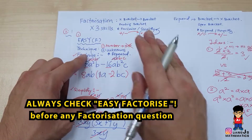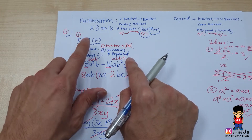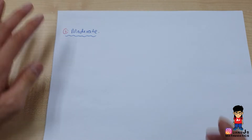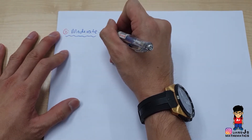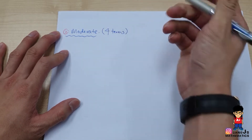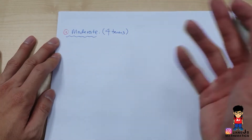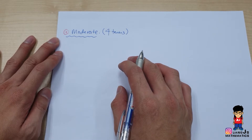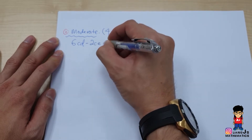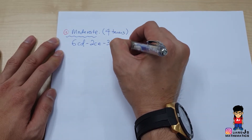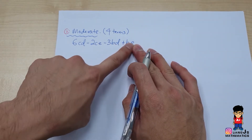Always check easy factorize first for every factorization question — that is the most important rule. Now, back to moderate: how you recognize it is when a question has a total of 4 terms. For our syllabus, 4 terms will almost certainly involve moderate factorization. For example: 6CD minus 2CE minus 3BD plus BE — notice there are 4 terms.